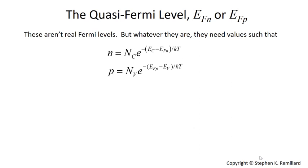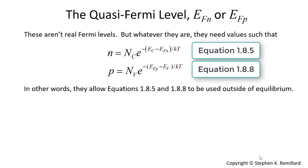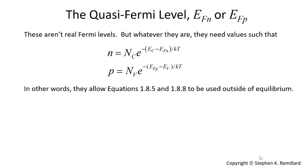From a more practical point of view, you can think of them as whatever they need to be to make the two most important equations in the book still work. So, equations 185 and 188 need to be modified slightly by putting the subscript n and p in here to indicate quasi-Fermi level. And so, we need to talk about how you might get those values instead of the actual Fermi level.